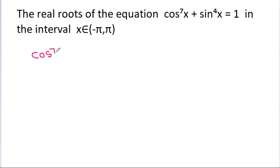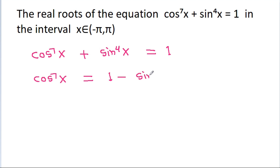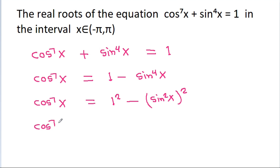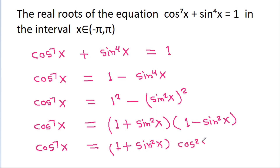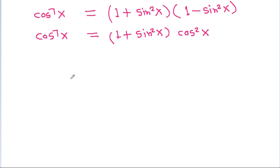We have cos⁷x + sin⁴x = 1, so cos⁷x = 1 − sin⁴x. Writing 1 as 1² and sin⁴x as (sin²x)², we apply the difference of squares identity a² − b² = (a+b)(a−b), giving cos⁷x = (1 + sin²x)(1 − sin²x), and since 1 − sin²x = cos²x, we get cos⁷x = (1 + sin²x)(cos²x).